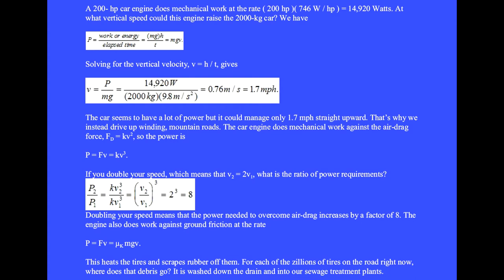We have power equals work or energy over elapsed time equals MGH over T, where H over T is the vertical velocity V. Solving for V equals P over MG, we get 0.76 meters per second, which we multiply by 2.25 to get 1.7 miles per hour.